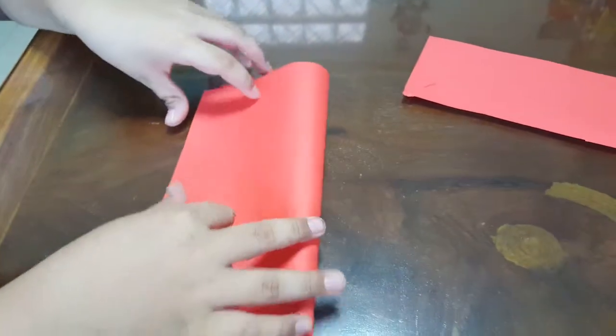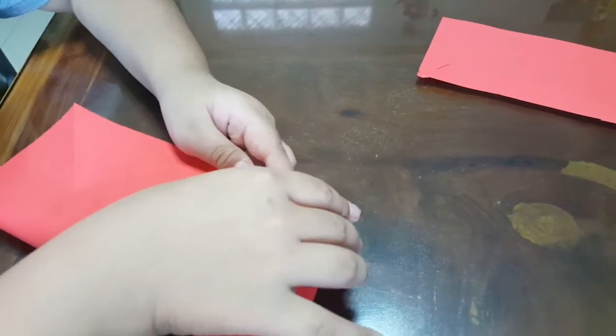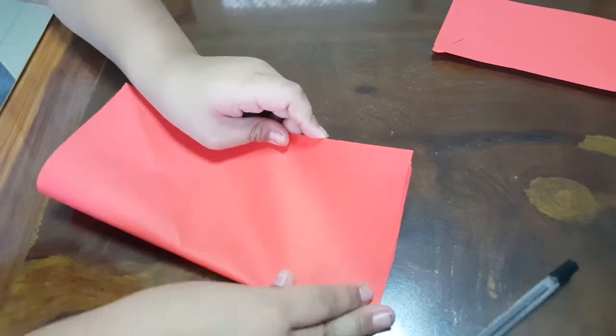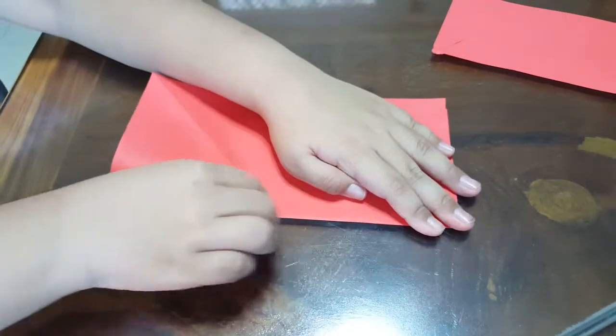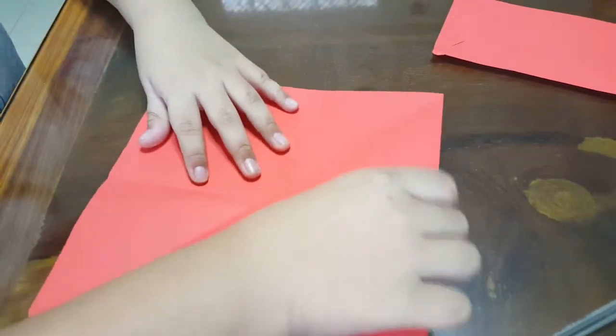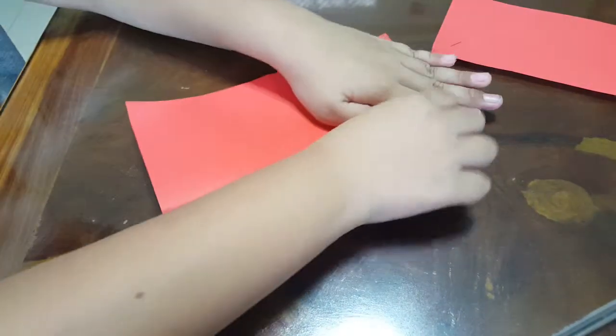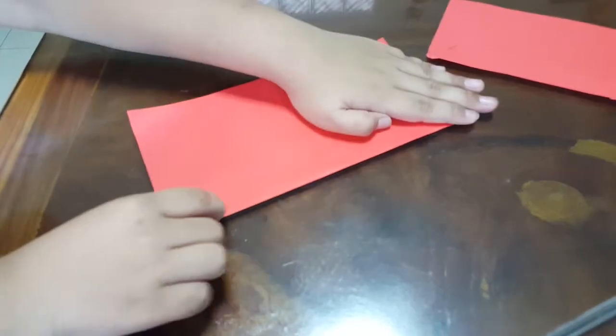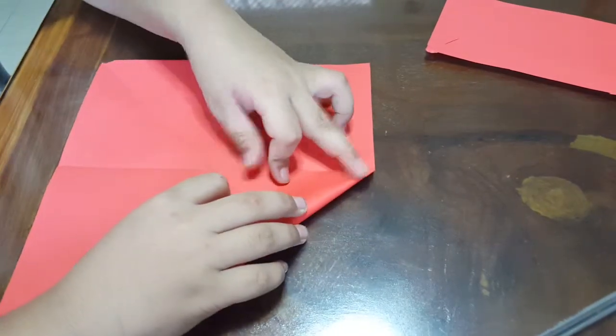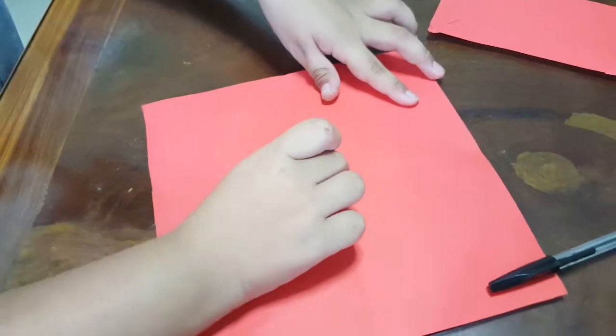Now we're going to fold like this as a window. So we're going to fold this to the square line and to the middle.